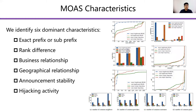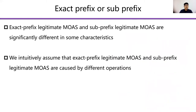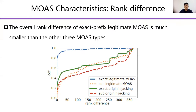Based on the ground truth dataset we built, we identify six dominant characteristics. Characteristic 1 is exact prefix or sub-prefix. Although our purpose is to distinguish origin hijacking and legitimate MOAS regardless of the affected prefix, we note that exact legitimate MOAS and sub-legitimate MOAS are significantly different in some characteristics. Characteristic 2 is rank difference. We find the overall rank difference of each legitimate MOAS is much smaller than the other three MOAS types, and 80% of exact legitimate MOAS conflicts have a rank difference of zero.